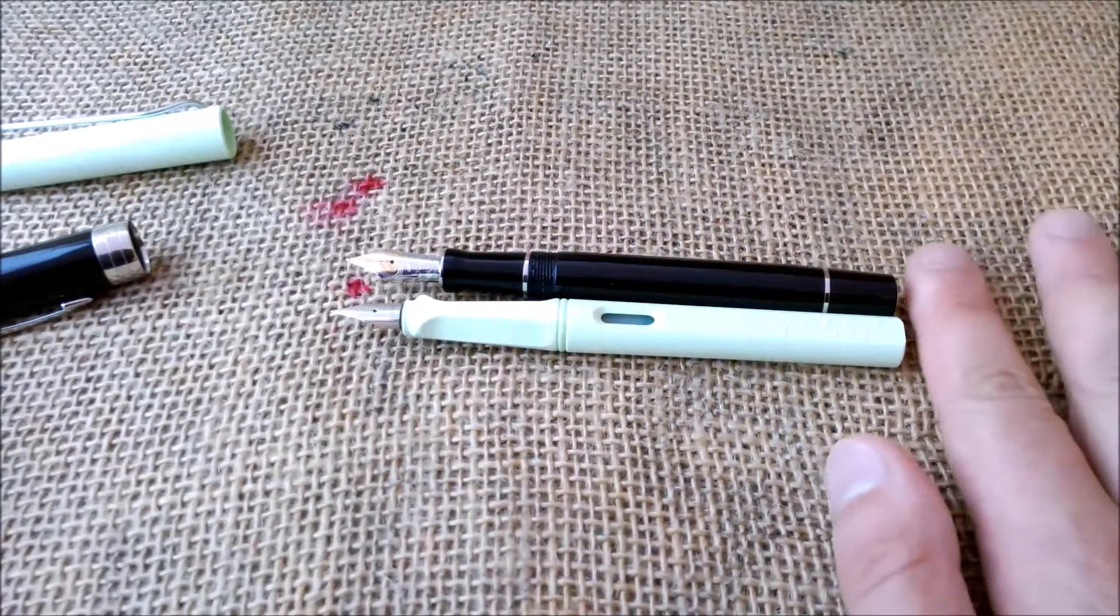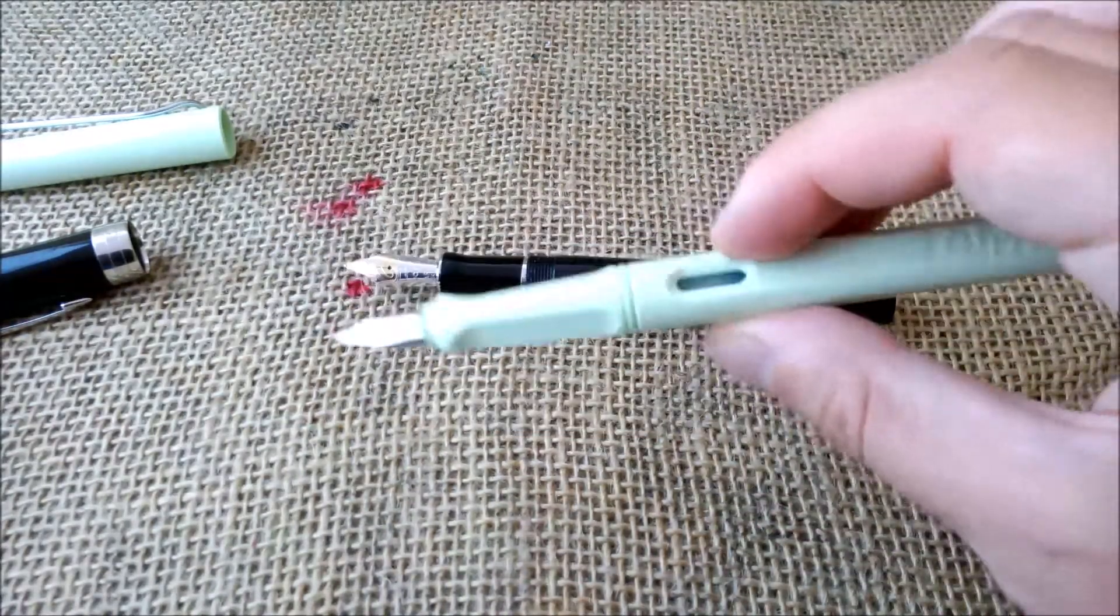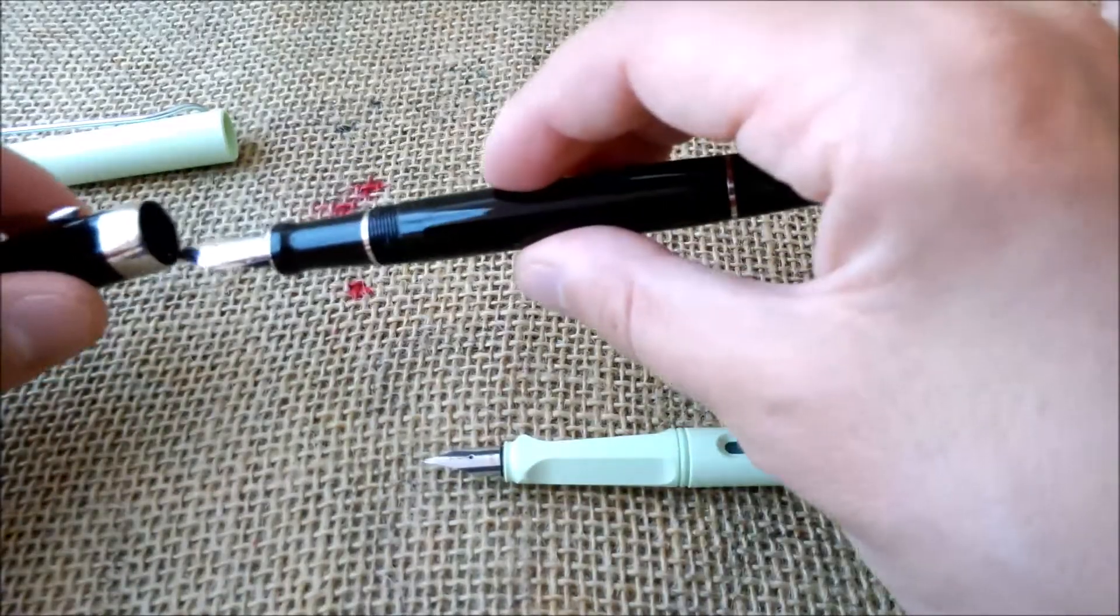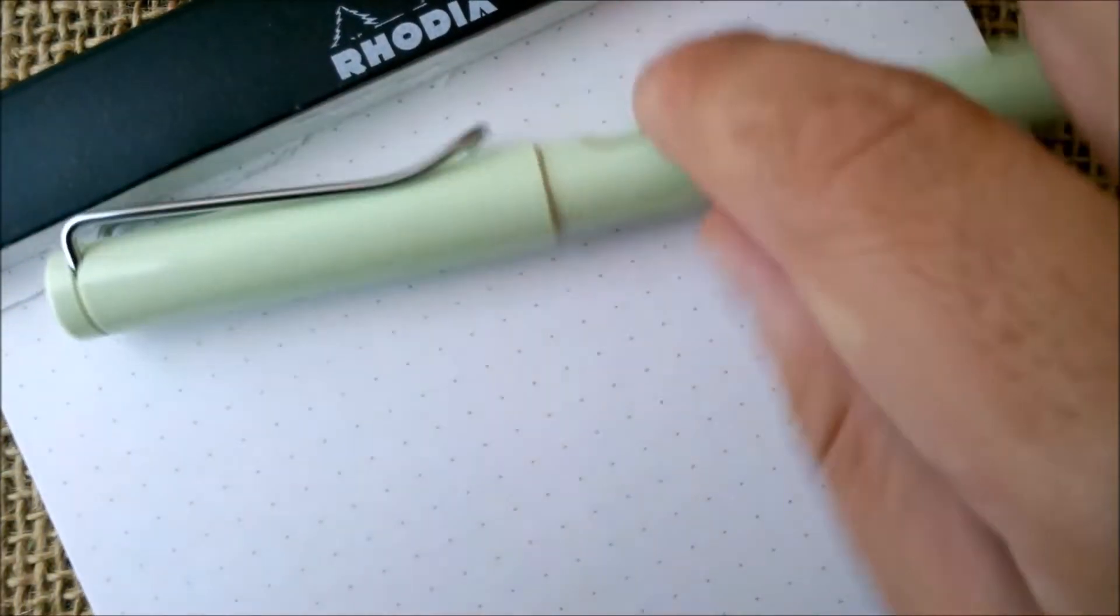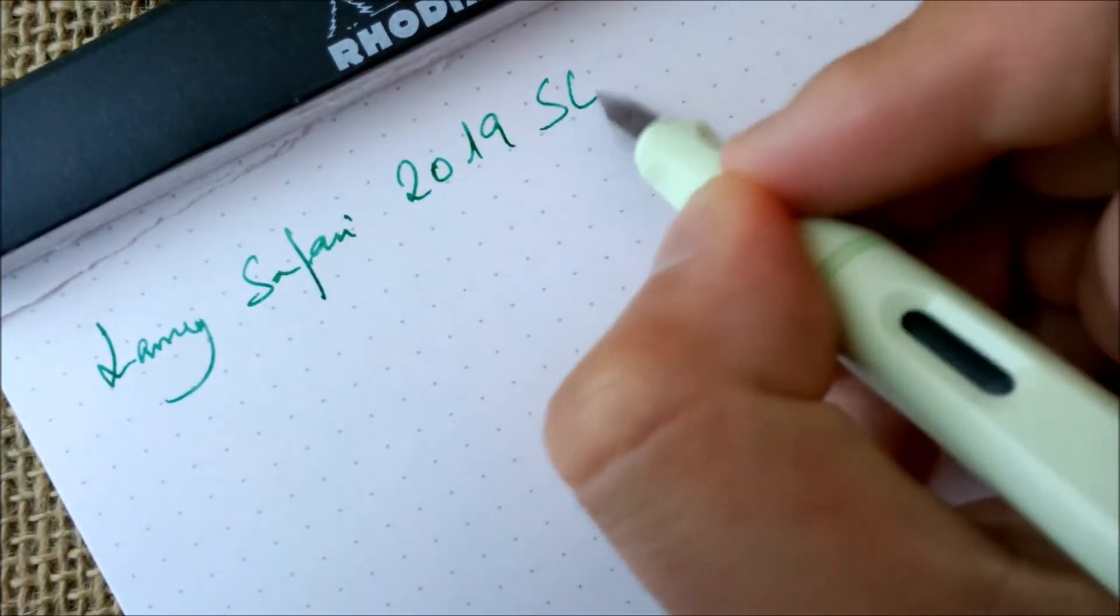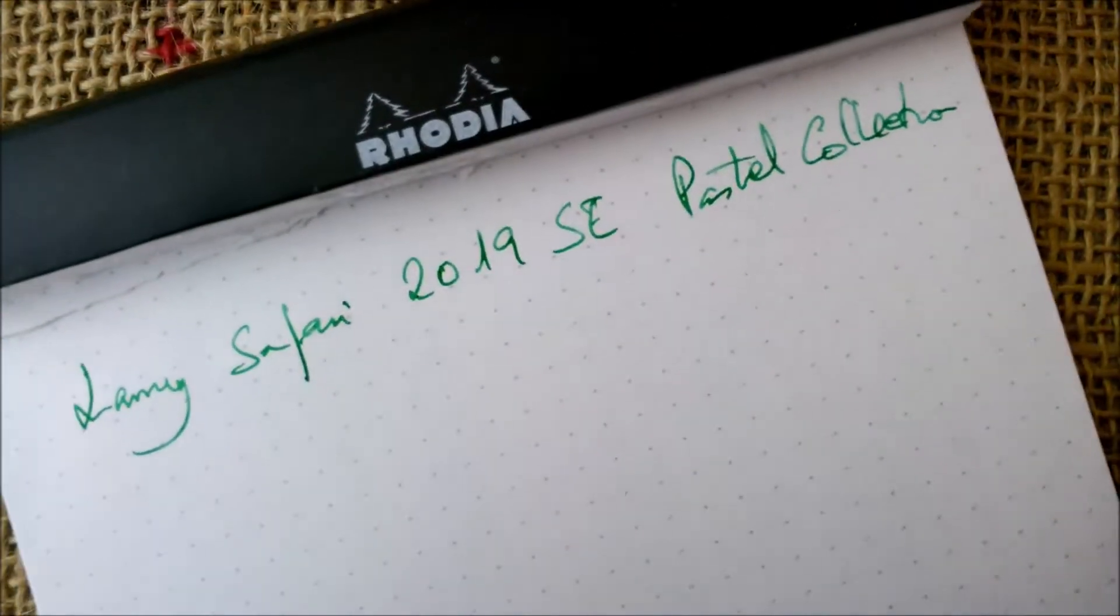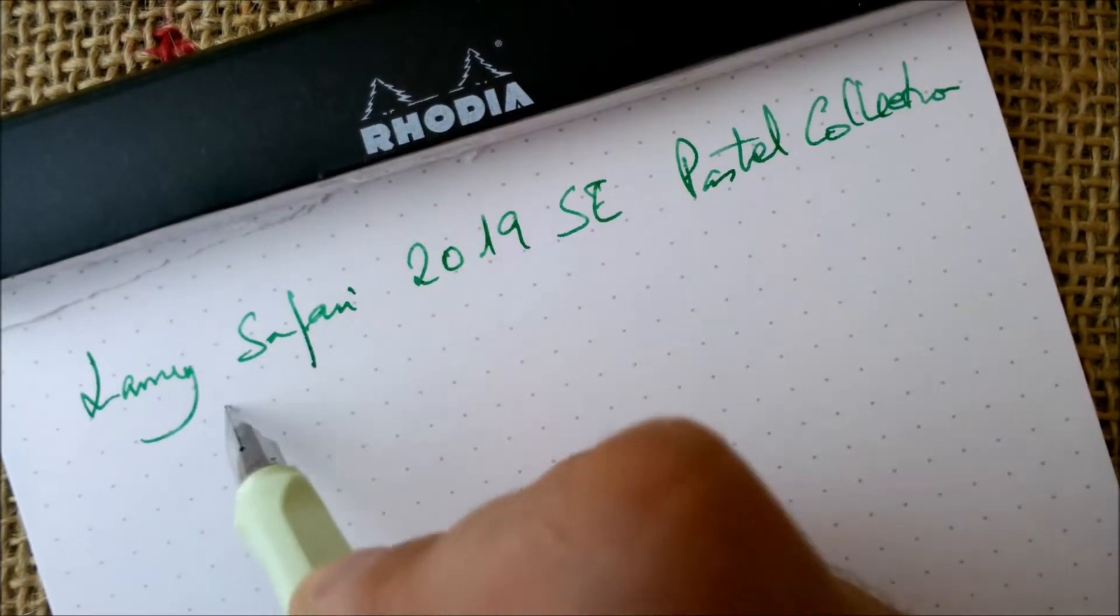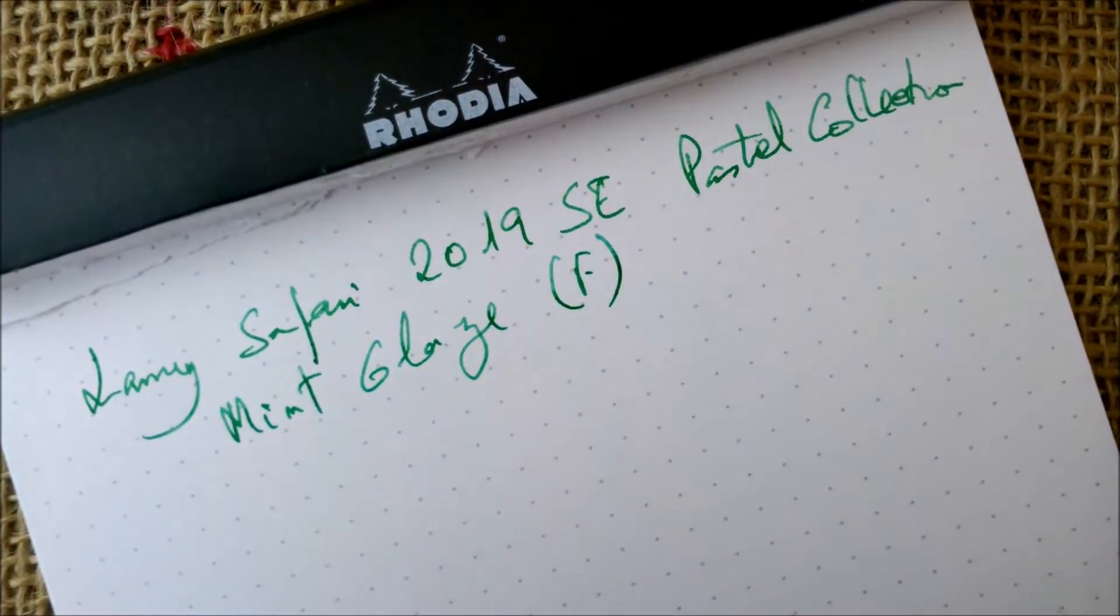The nib on this one is bigger but the tip goes almost to the same place, so nice sized pens. The biggest inconvenience I may see is this triangular section. Now let's go for the writing sample. Here we have it - I will not post the pen. This is the Lamy Safari 2019 special edition, the pastel collection.